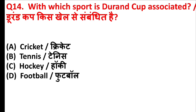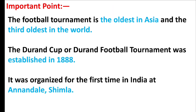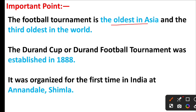With which sport is the Durand Cup associated? The right answer is option D: Football. Friends, the football tournament is the oldest in Asia and the third oldest in the world. The Durand Cup or Durand football tournament was established in 1888. It was organized for the first time in India at Annandale, Shimla.